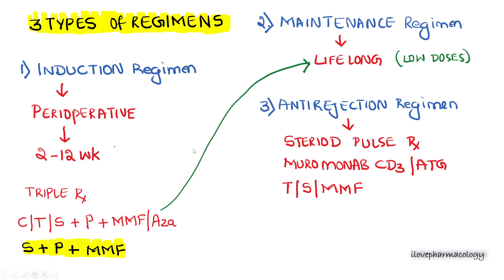There are three types of regimens: induction, maintenance, and anti-rejection. Under the induction regimen, immunosuppressive agents are started preoperatively and continued up to 2 to 12 weeks post-operatively. The most commonly used triple therapy includes calcineurin inhibitors like cyclosporine or tacrolimus, an mTOR inhibitor like sirolimus, along with glucocorticoid prednisolone plus mycophenolate mofetil and azathioprine.